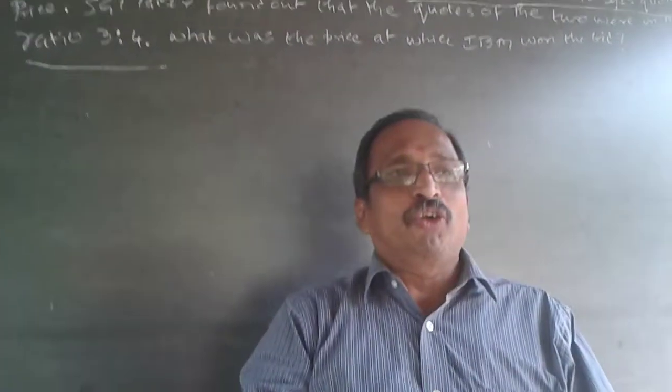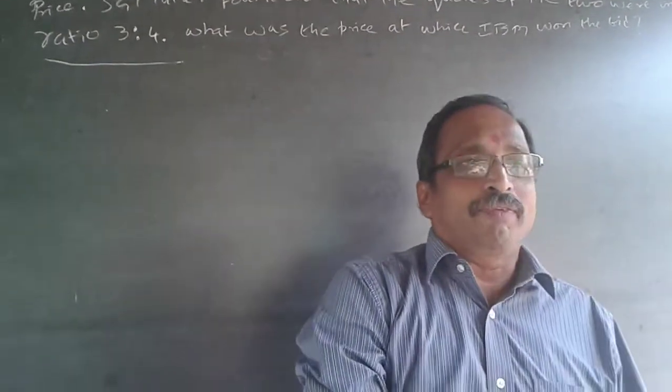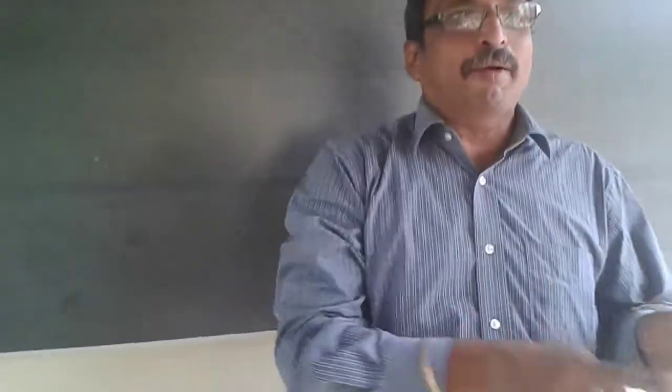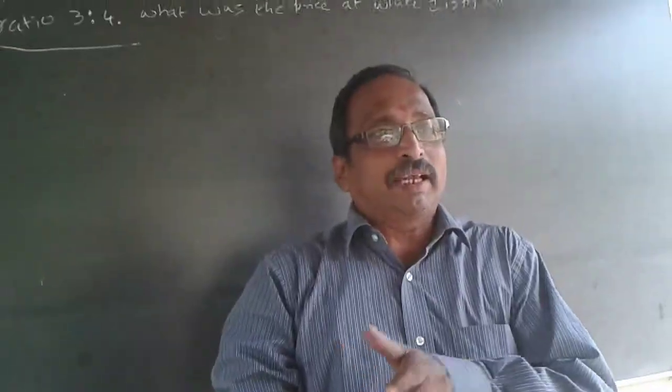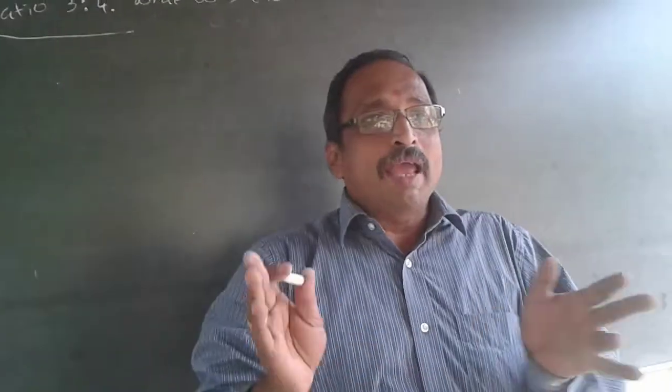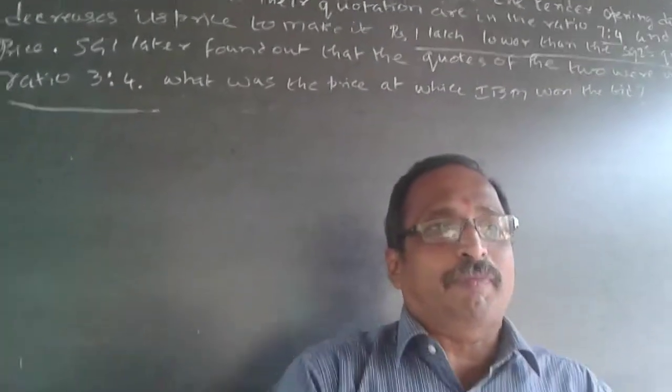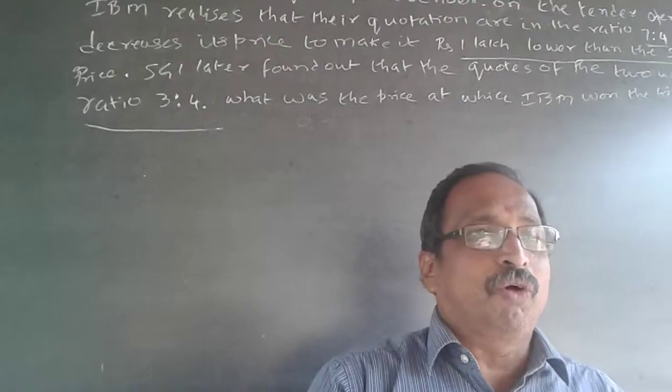Supposing SGA is quoting 2.5 lakhs, IBM would have quoted Rs. 1.5 lakhs. SGA is quoting 5 lakhs, IBM would have quoted Rs. 4 lakhs. SGA is quoting 3 lakhs, IBM would have quoted Rs. 2 lakhs. Like that, IBM's quotation will be Rs. 1 lakh less than SGA's quoted price. Nothing to do with 7 to 4.